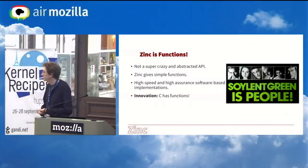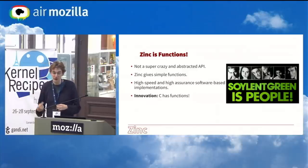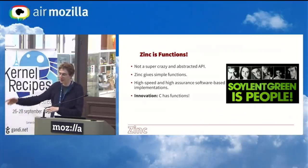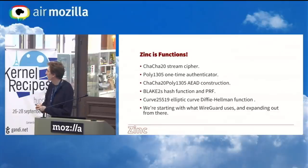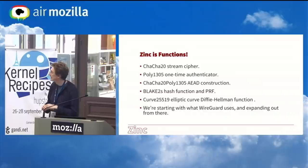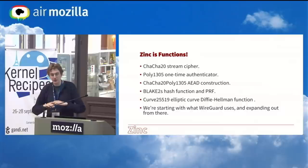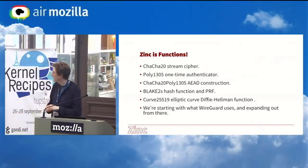We're also trying to do a good job in the implementation — going for high speed and high assurance implementations, keeping this for now as software-based things that run on your CPU. We're not trying to build a crazy async architecture that involves sending things to some other device and then getting a callback sometime later. We're just trying to keep these as the simple software core. What we have for now are things WireGuard uses: ChaCha20, a high-security stream cipher; Poly1305 for authentication tags; and the construction of the two that makes an AEAD — authenticated encryption with additional data. There's an RFC for it, it's in TLS, and WireGuard uses it.